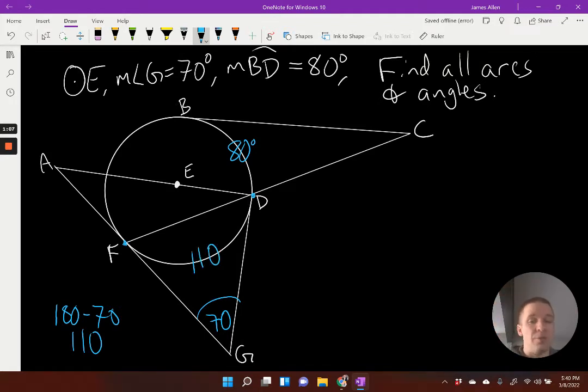Those two, the arc and the angle add to 180 degrees. They're not supplementary because they're not two angles, but their measures do add up to 180. Now it says that it's circle E, which means that this right here, that's a diameter, cuts the circle in half, 180 degrees apiece. Well, if I have 110 already spoken for, this part right here is 70 degrees, that arc is 70 degrees.